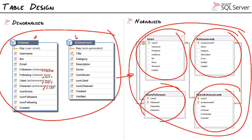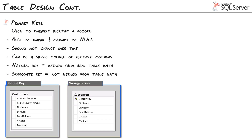Let's talk about keys. Starting with primary keys: they're used to uniquely identify a record — without a primary key SQL Server has no idea how to find a record. They must be unique, they cannot be null, and they should not change over time. A key can be either a single column or multiple columns, which would be known as a composite key. The first decision when choosing a primary key is identifying candidate keys — what could potentially be a key — and there's a huge ongoing debate between natural keys and surrogate keys.